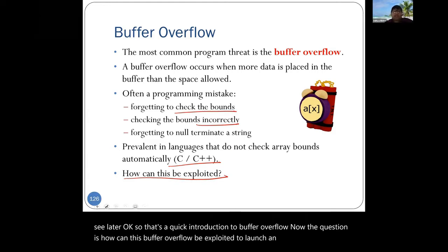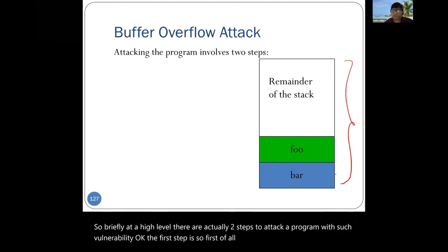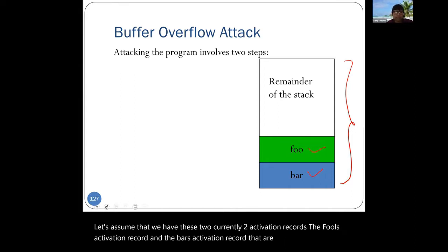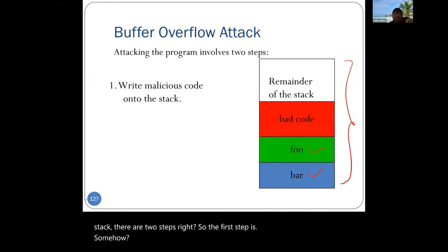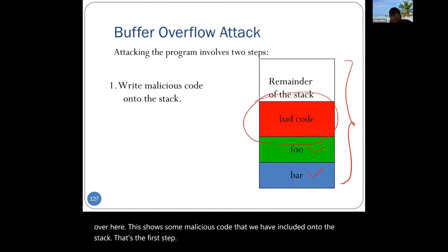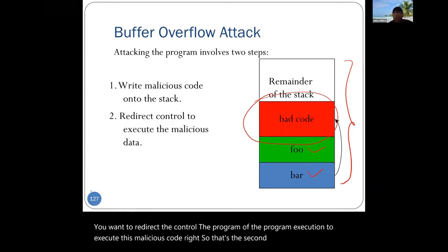At a high level, there are two steps to attack a program with such a vulnerability. The first step is to somehow write some malicious code onto the stack — the red section here shows some malicious code that has been placed onto the stack. The second step is, once you have written this malicious code onto the program stack, to redirect the control of program execution to execute this malicious code.